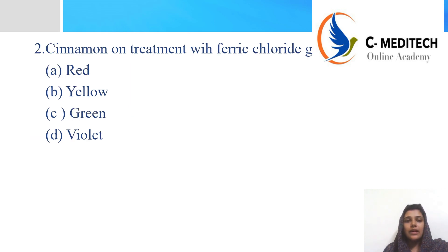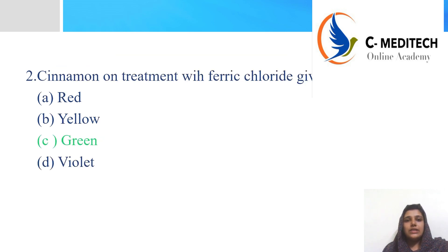Second question: cinnamon on treatment with ferric chloride gives which color? Options are: A) Red, B) Yellow, C) Green, D) Violet. The correct answer is option C, green. Cinnamon is obtained from the inner bark of Cinnamomum zeylanicum, belonging to the family Lauraceae.